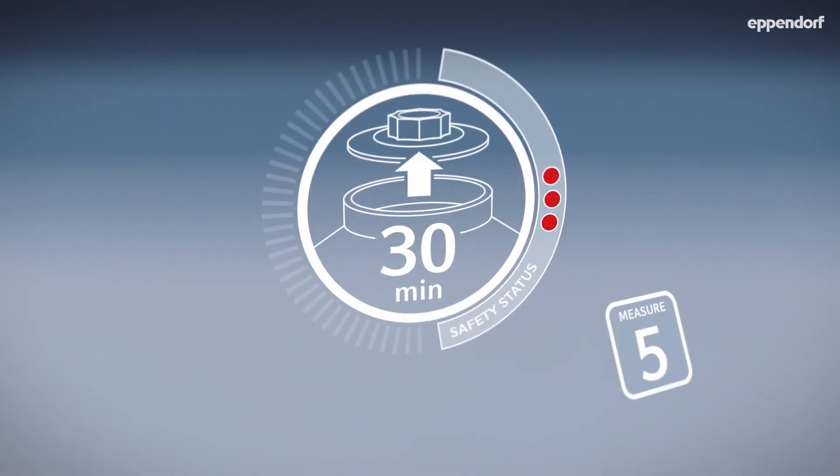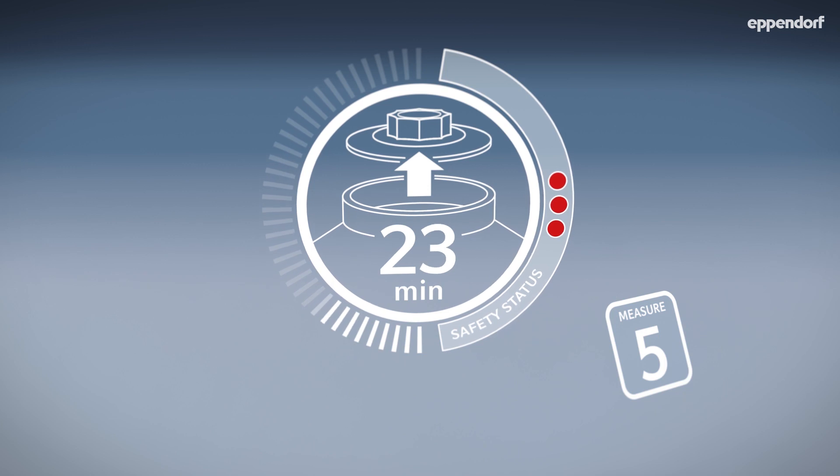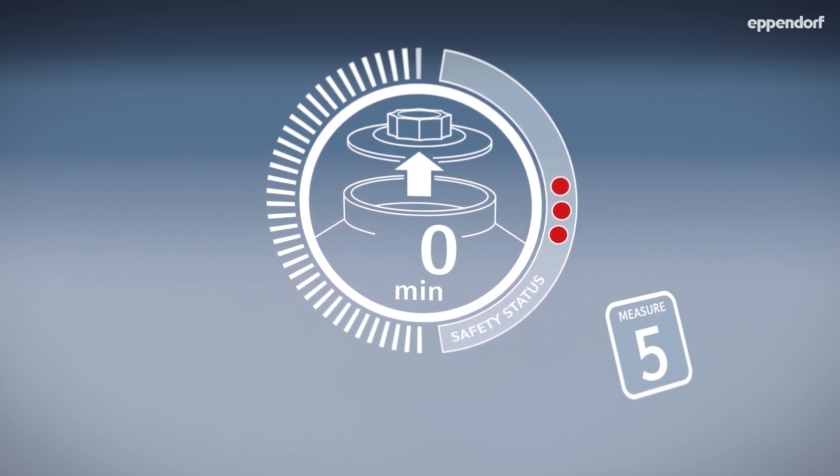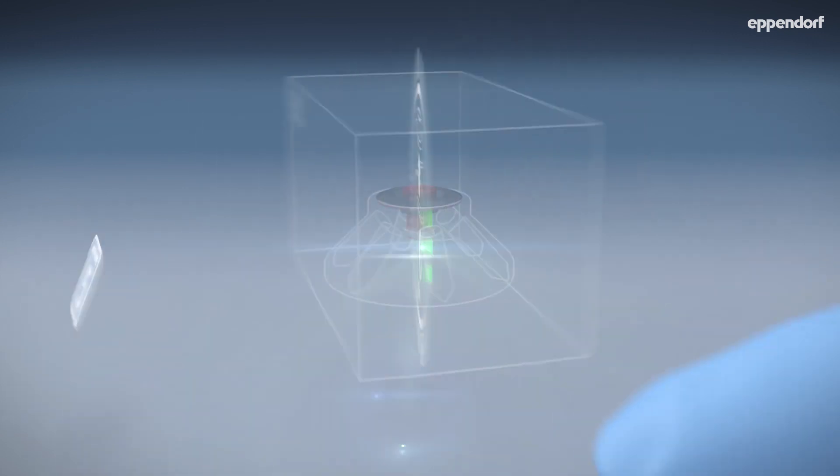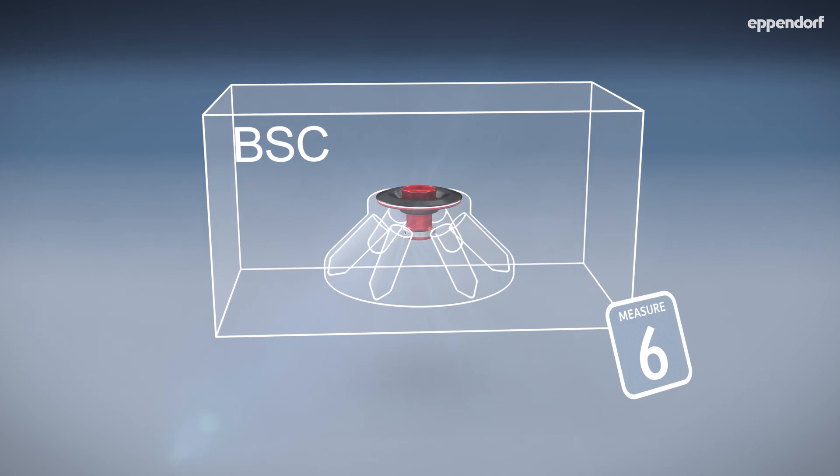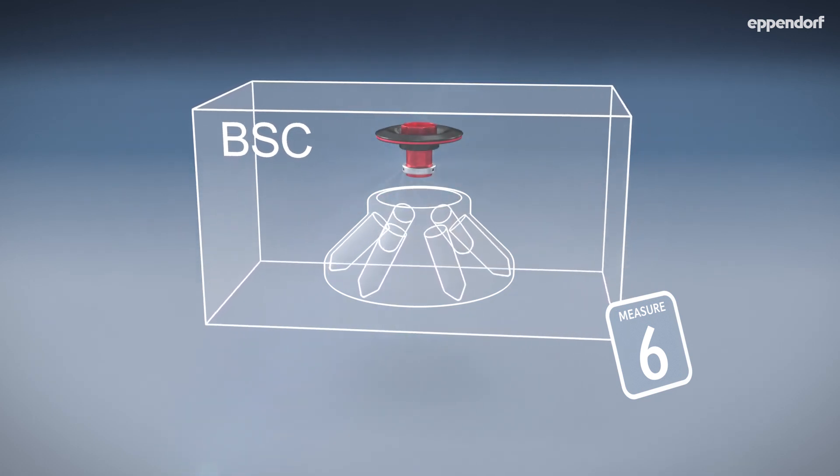If a tube does break or leak, do these two things. Wait at least 30 minutes before opening the aerosol-tight lid or cap of the rotor to let the aerosols settle. If possible, load and unload the rotor in a biosafety cabinet to contain possible aerosols inside the cabinet.